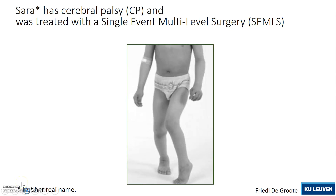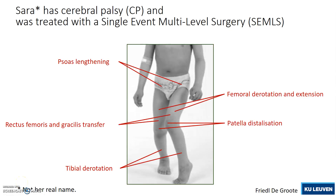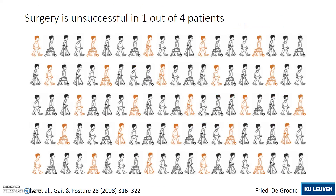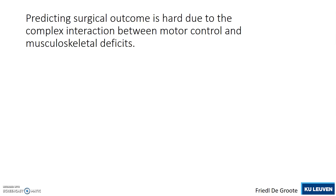Sarah has cerebral palsy and was treated with a single event multi-level surgery. Surgery is unsuccessful in one out of four patients. Predicting surgical outcome is hard due to the complex interaction between motor control and musculoskeletal deficits.